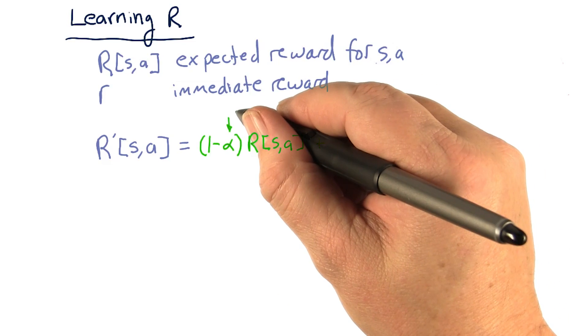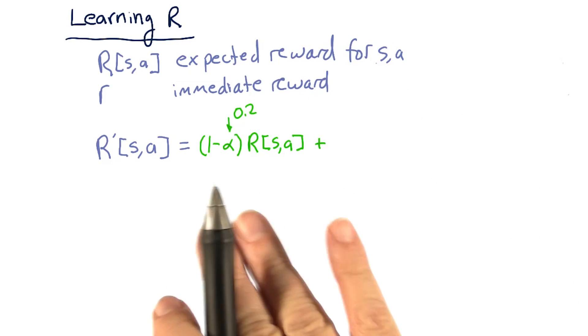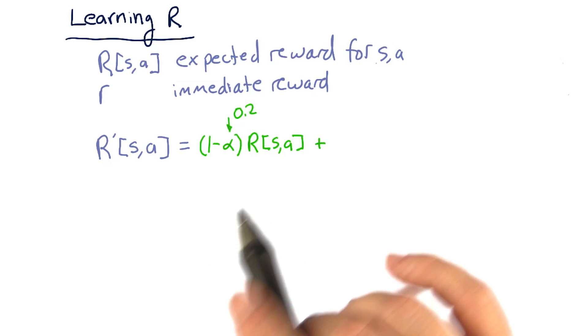And again, that can typically be something like 0.2. Anyways, we multiply that times our current value for R.